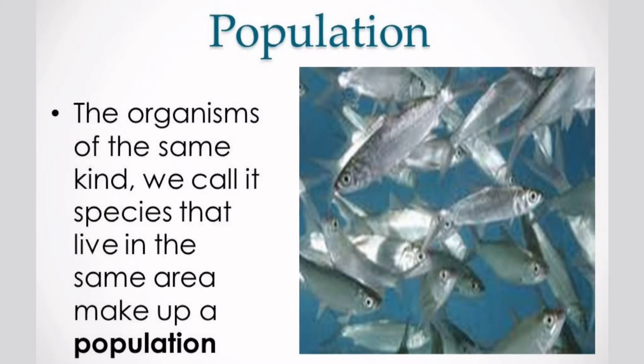The organisms of the same kind — we call it species — that live in the same area make up a population. Like when individual persons live in the same area or location, they make up the human population of that area. And if a certain species of fish, like milkfish or locally known as bangus, are living in the same area, they comprise the milkfish population.